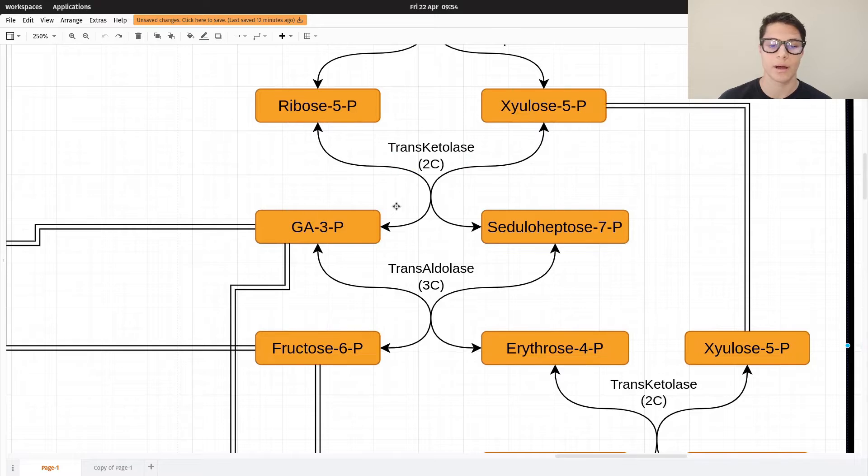And the results are glyceraldehyde 3-phosphate and sedoheptulose 7-phosphate. How many carbons here? Seven. Here? Three.